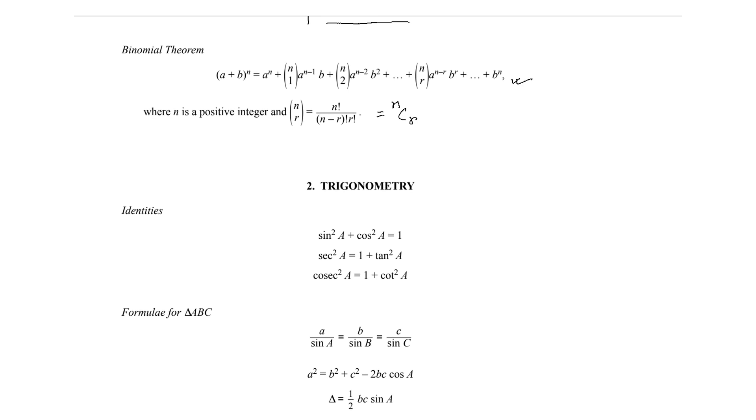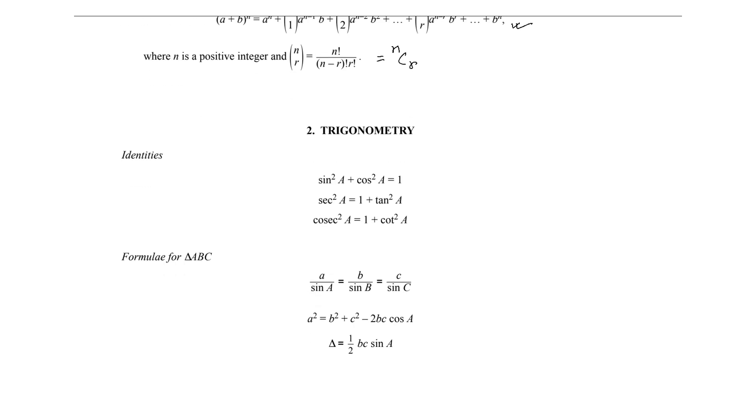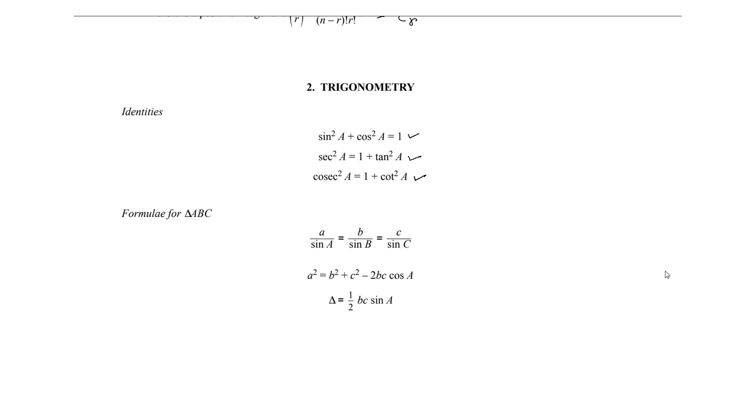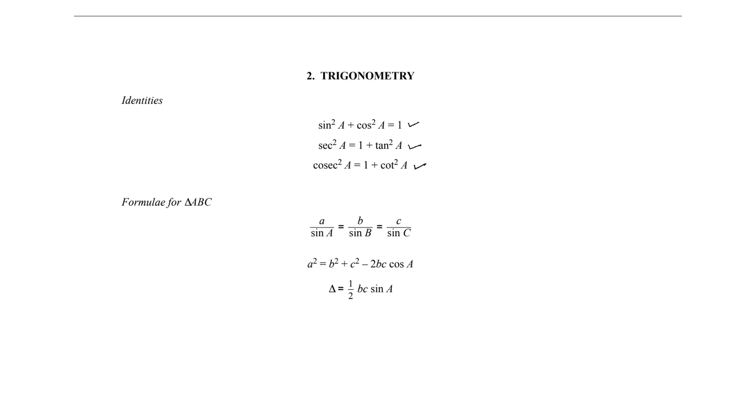Now let's go to the second half of the page. Here we have formulas from trigonometry. First, we have three identities: this one is the relationship between sin²A and cos²A, this one is the relationship between sec²A and tan²A, and this one is the relationship between cosec²A and cot²A.